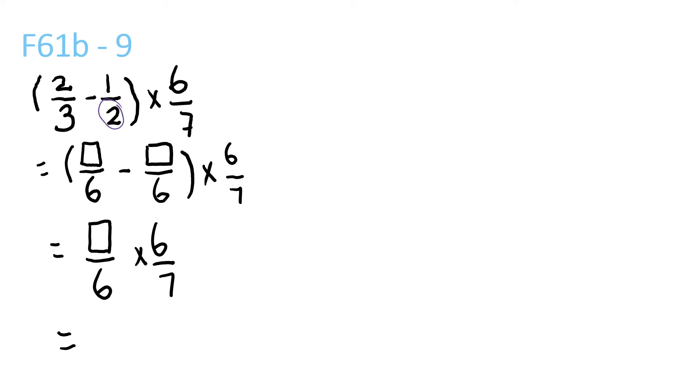It's easier to work it out. You find the LCM, which is 6. 3 times 2 is 6. So you do 2 times 2. So 4 and 3. Then 4 minus 3 is 1 over 6.